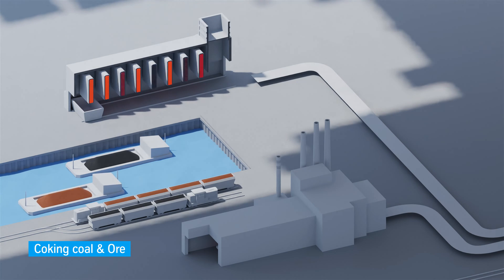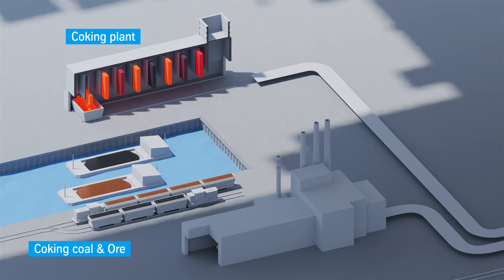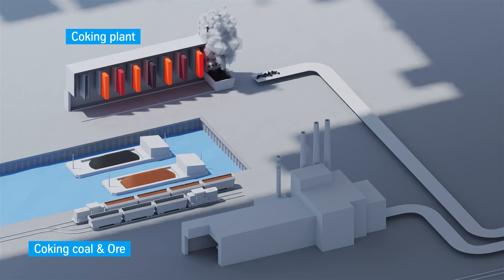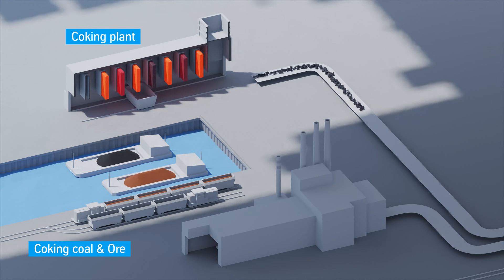The coal goes to the coking plant first, where it is baked at very high temperatures for 25 hours. The coke thus produced is cooled down. It is porous now and consists almost exclusively of carbon, exactly what is needed for the blast furnace.